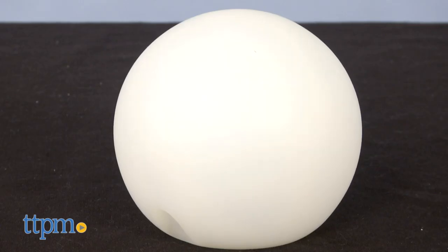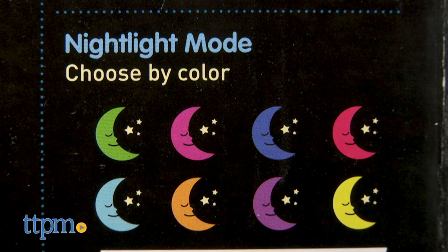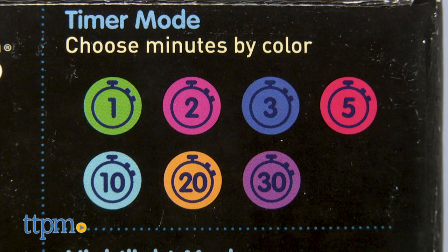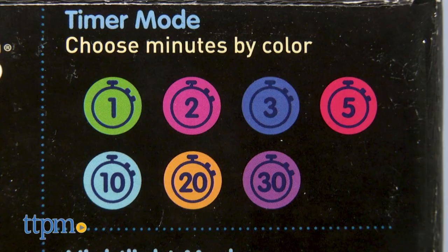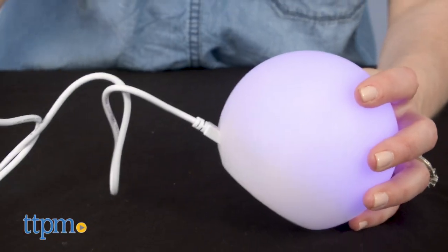The dual functioning product emits a soft glow in one of eight colors to provide a soothing sleep space as a nightlight or a time and behavior management tool at home or in the classroom. If you're looking for more great baby products then click subscribe below and check out all of our reviews.